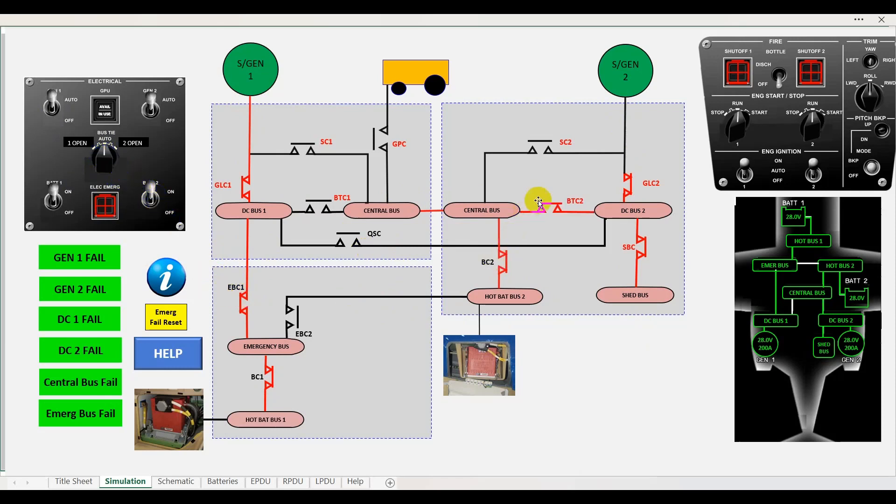We can click that back round, close bus tie 2 again, and now engine 2 is supplying the central and DC bus 2 shed bus and charging number 2 battery. Engine number 1 is supplying DC bus 1, emergency bus, and recharging battery number 1.